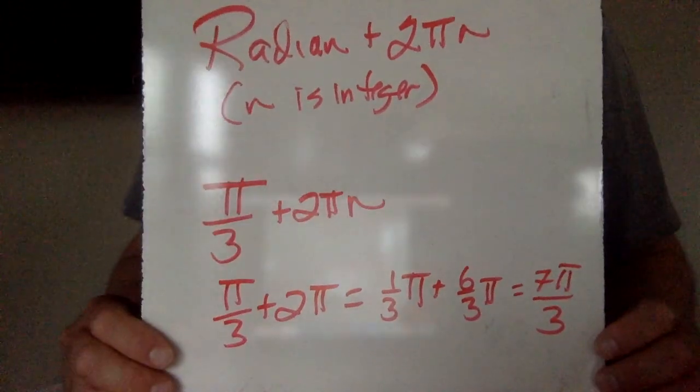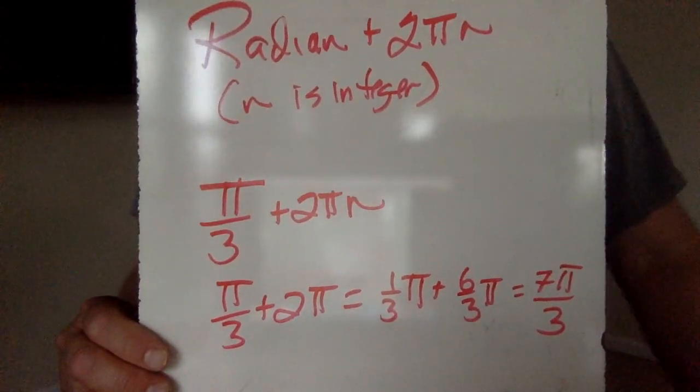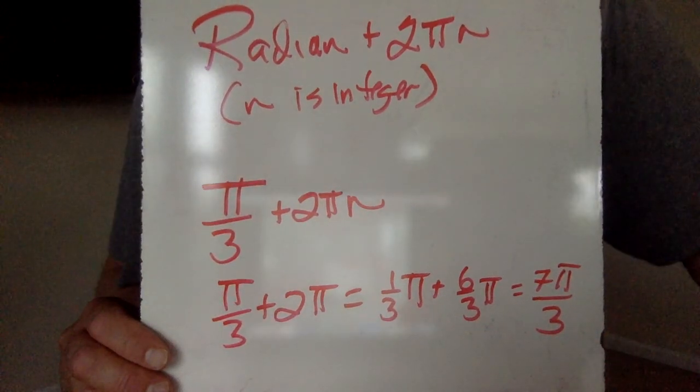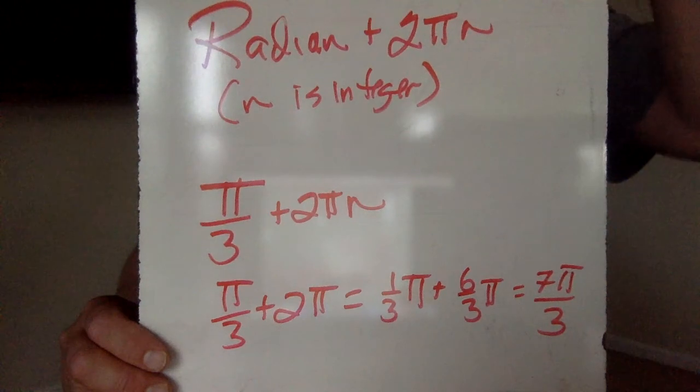And so in radians, if you want to know some co-terminals, same way, think snowboarders, go and end in the same place. Pi over 3 plus 2 pi n.